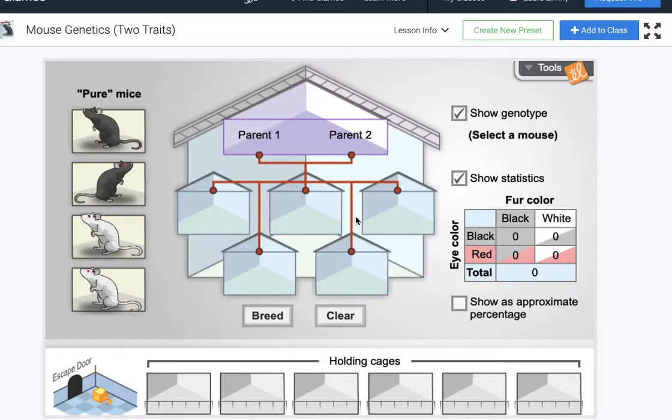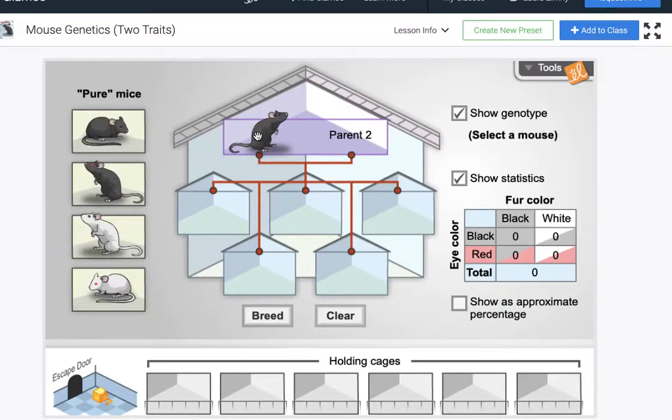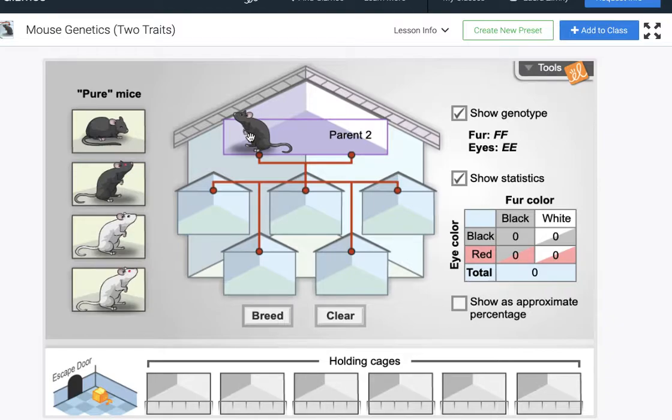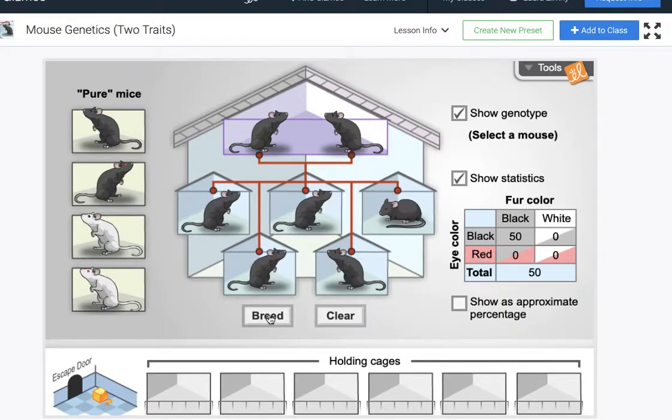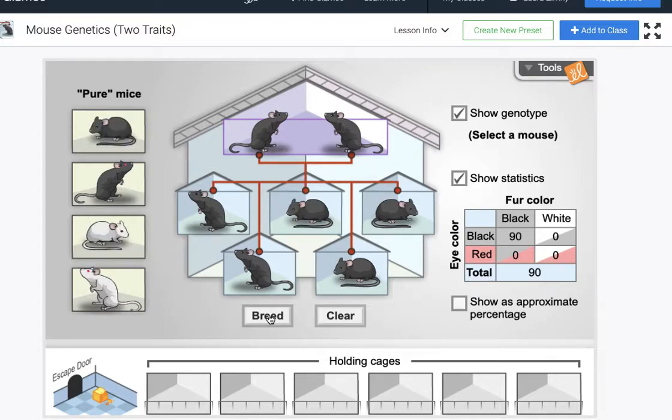So reviewing what we know, the simulation is kind of awesome so you can take a pure mouse, a mouse that is homozygous for both characteristics of fur color and eye color. We can see over here in the right hand side it's capital F capital F for fur which represents black and then its eyes are capital E capital E which represents a dark or black eye color. So a homozygous organism when you breed them together no matter how many times you breed them they are going to produce offspring that are exactly phenotypically and genetically similar.